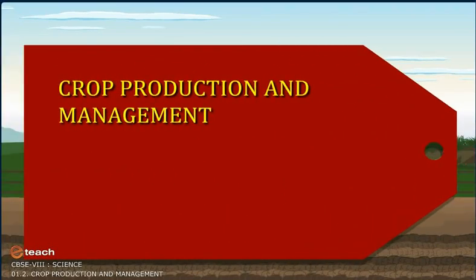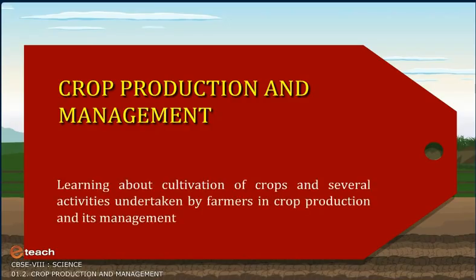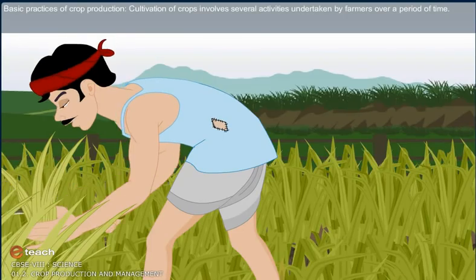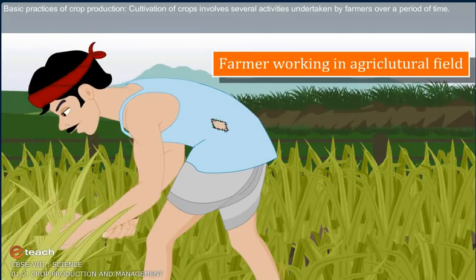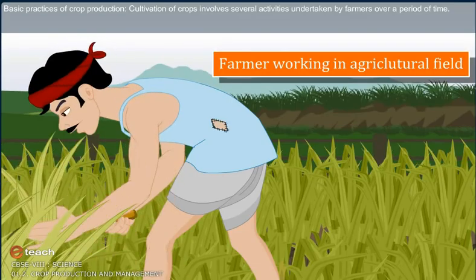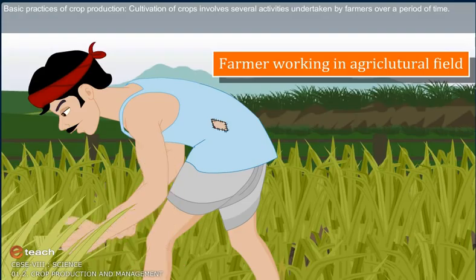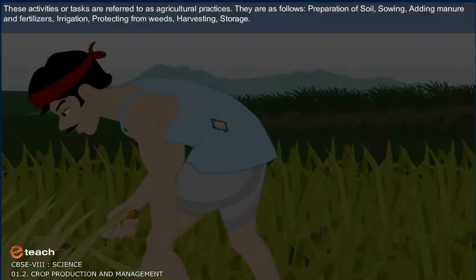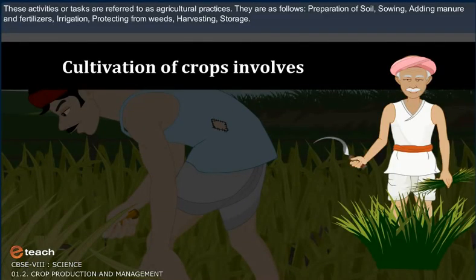Crop production and management. Learning about cultivation of crops and several activities undertaken by farmers in crop production and its management. Cultivation of crops involves several activities undertaken by farmers over a period of time. These activities or tasks are referred to as agricultural practices.